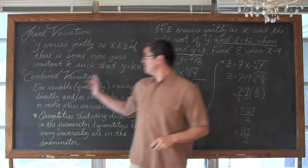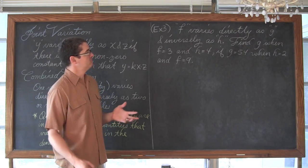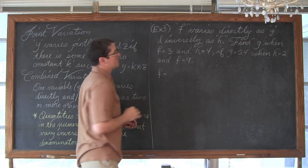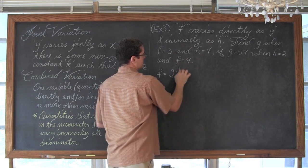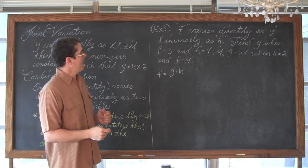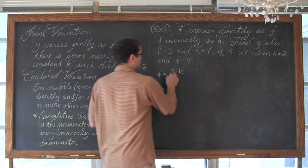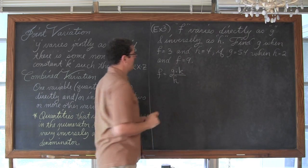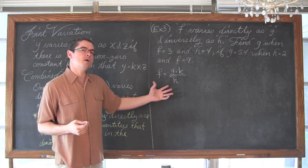Let's get to that next example — it will be a combined variation problem, and then the last one will be a word problem. Example number three says f varies directly as g and inversely as h. So f equals — it varies directly as g, meaning kg in the numerator, because direct variation is y equals kx. And inversely as h: inverse variation is y equals k over x, so that inverse variable is found in the denominator. So the structure is f equals kg over h.